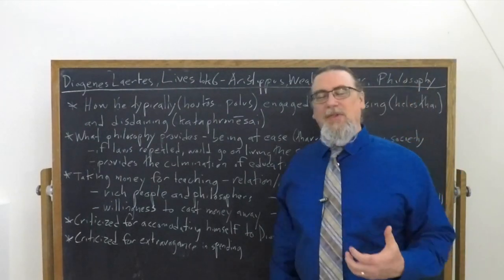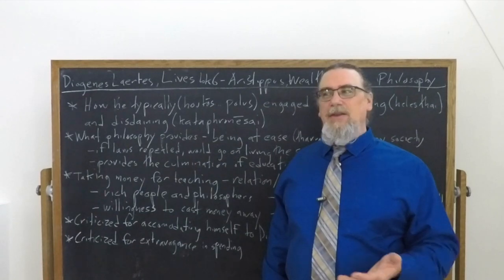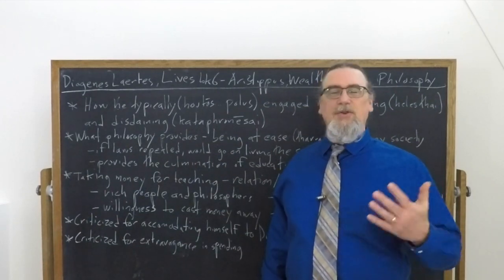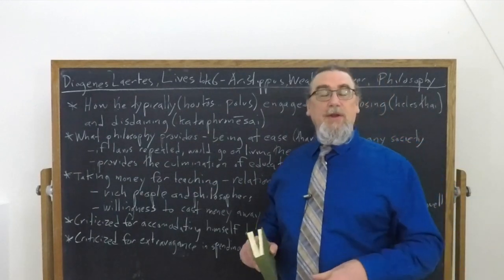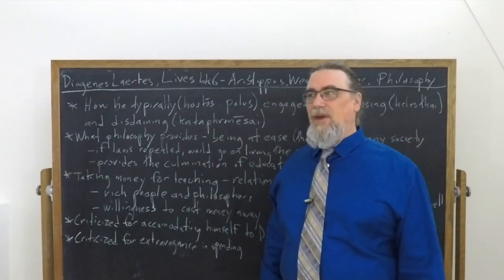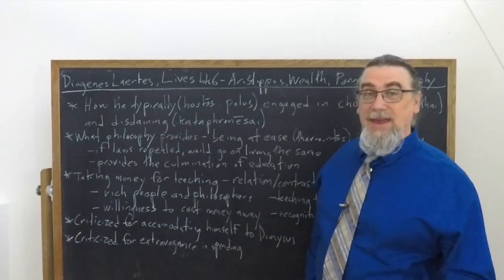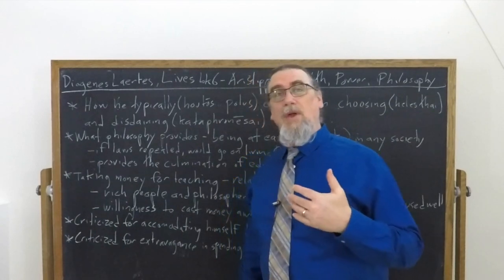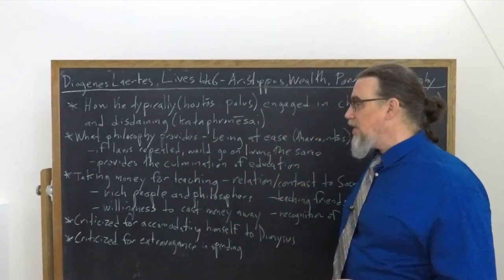So what we see here in this relation to money is that there's a recognition that money gets things done. You do need it for some degree, but you don't want to be beholden to it. And you can boldly ask people for it because it is of lesser value than the things that Aristippus considers to be good. And other people recognize as good in him as a philosopher.